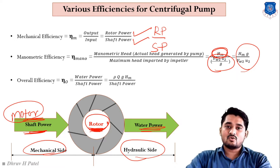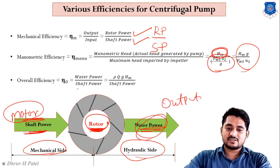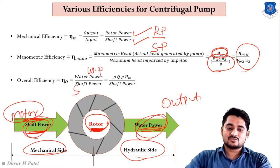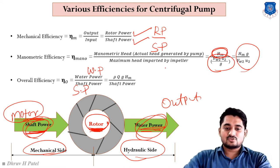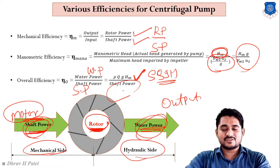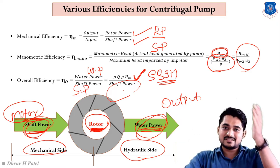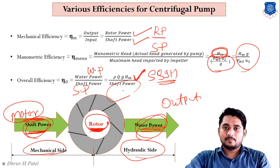Next is overall efficiency — the overall action of the centrifugal pump. Output of the centrifugal pump is water power (WP) and input is shaft power (SP). Water power at output is ρQgH, which is the potential energy of the water. So overall efficiency equals water power divided by shaft power.